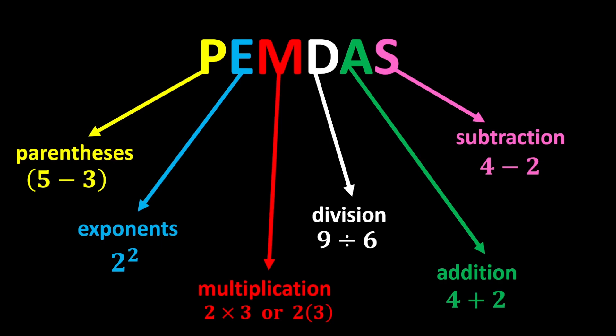After the exponents, we perform the multiplications and divisions, and finally we do the additions and subtractions. Multiplication and division have equal priority, so whenever both appear in an expression, move from left to right and perform whichever you reach first.